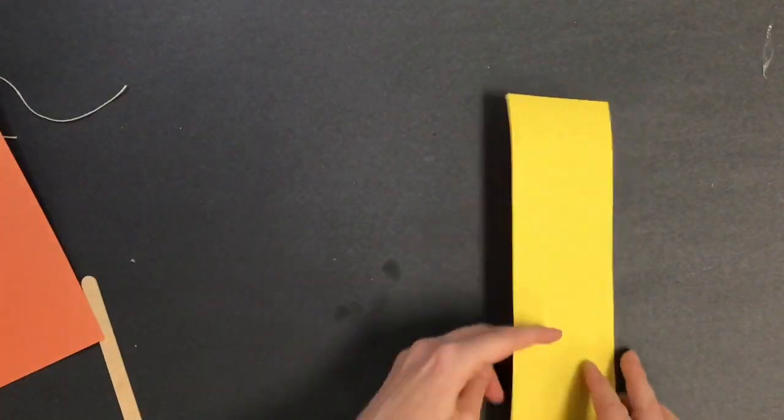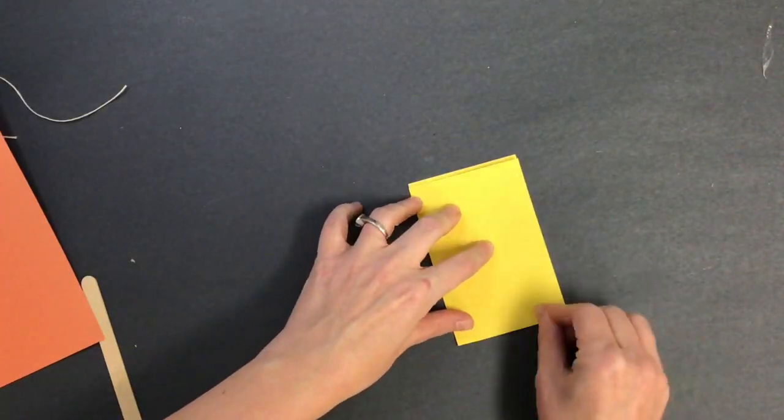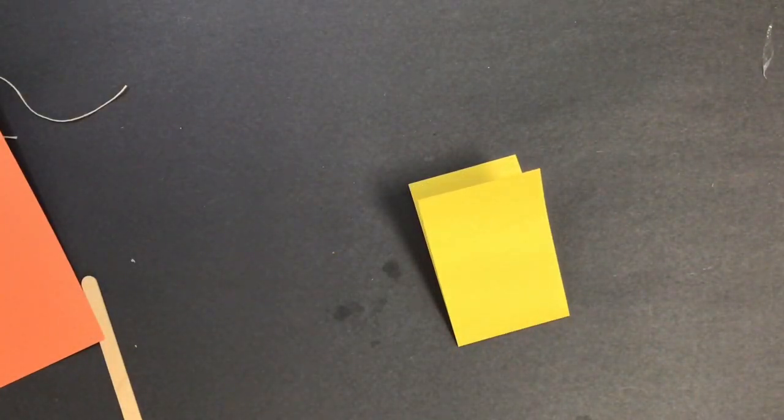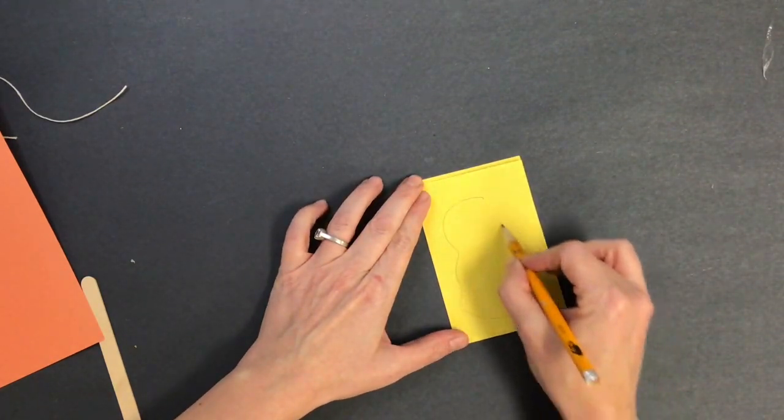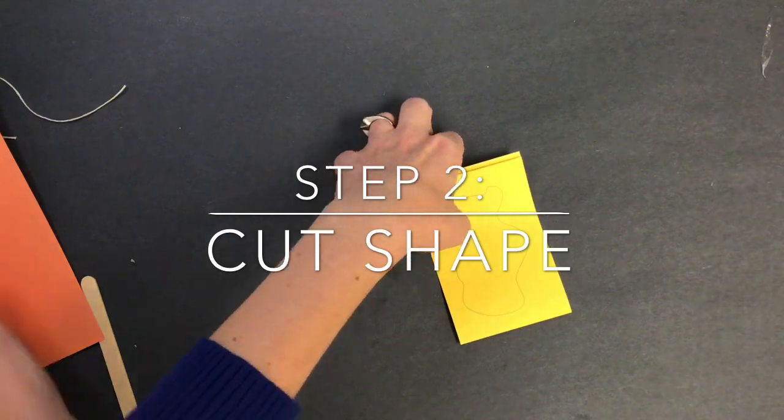Step number one, fold and draw your shape. So you want a skinny piece of paper, you're going to fold it in half, and then you're going to draw a shape. As you press down on your paper, you can make your shape any kind of shape that you would want.